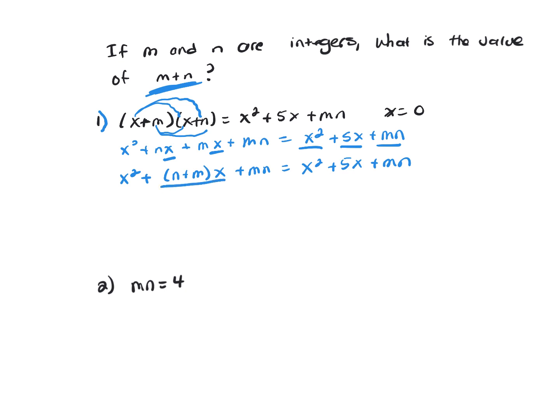So this term here is the term that has the x on it, and so we know the coefficient is 5. Coefficient here is n plus m. So n plus m equals 5.